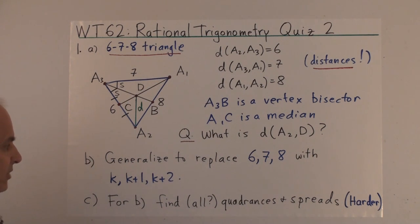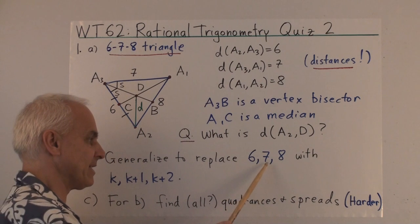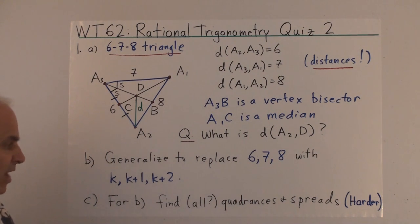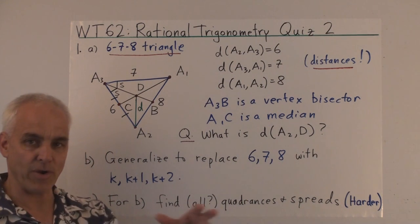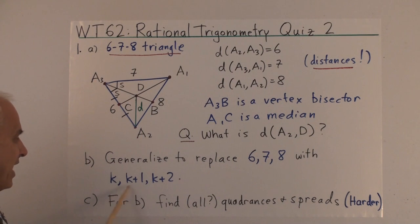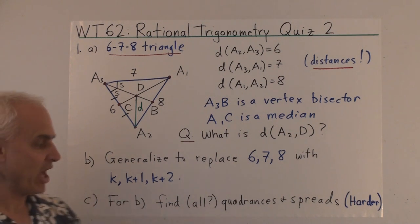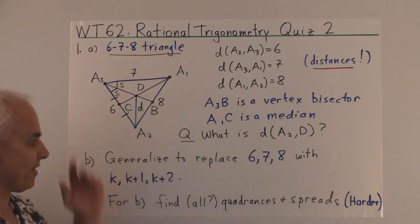And if you work that out, then you can try to generalize the situation by replacing 6, 7, 8 with another triangle whose lengths are going up incrementally. Say K, K plus 1, K plus 2. And if you figure that out, then as a further challenge, try to calculate all the quadrants and spreads in the diagram.